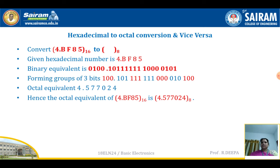The next conversion is hexadecimal to octal. For the given hexadecimal number 4.BF85, first represent each hexadecimal digit as a 4-bit binary equivalent: 4 is 0100, B is 1011, F is 1111, 8 is 1000, and 5 is 0101. Then group that full binary string into 3-bit groups and write the corresponding octal equivalent for each group.